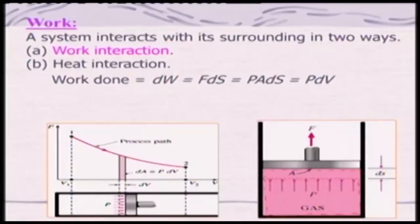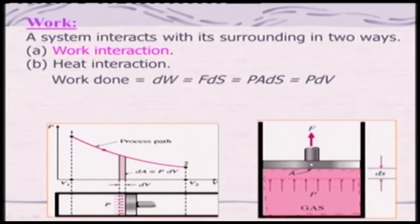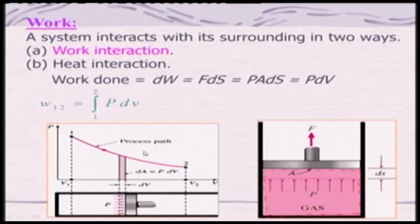From the mechanics point of view, the work done — if I take a tiny strip — is nothing but your displacement. The piston has moved through distance dS, and with force acting through that distance, the force is acting with pressure P from the system on the surface area A, so it becomes P·A·dS. This change A·dS is nothing but the change in volume dV. If you integrate this between state 1 and state 2, you will get ∫P dV. To integrate this, you must know the relationship between pressure and volume.